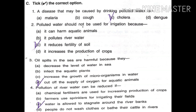Number 3: oil spills in the seas are harmful because they cut off the supply of oxygen for aquatic animals. So the answer is D.